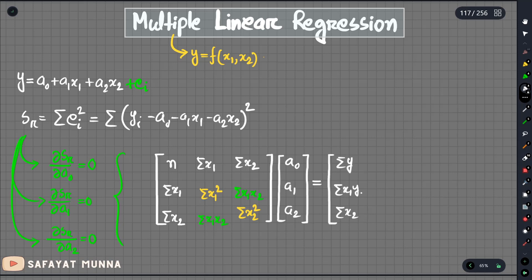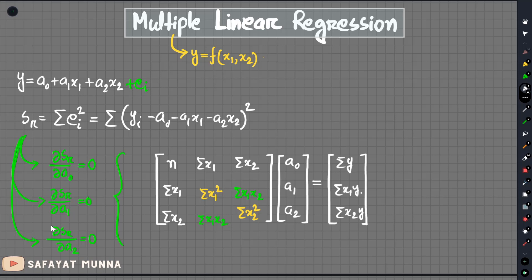And the right-hand side contains summation of y, summation of x1*y, and summation of x2*y. So we have to move the matrix format — because this is the same thing when we have three variables — and we have to convert the two variables accordingly.